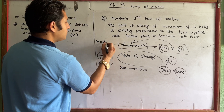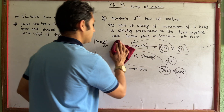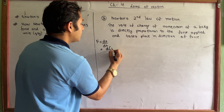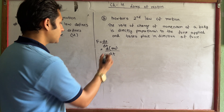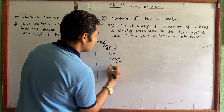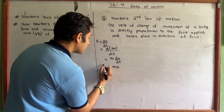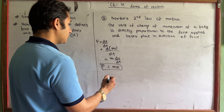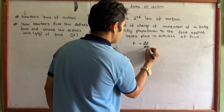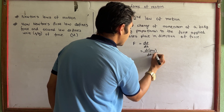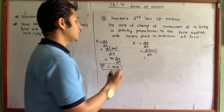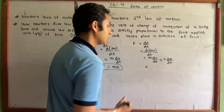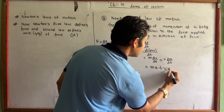F is equal to dp/dt. Here dp/dt is the rate of change of momentum. Now, p equals mv, so F equals dp/dt equals d(mv)/dt. Now if mass is variable, we apply the product rule: m dv/dt plus v dm/dt — that is m into a plus velocity into the rate of change of mass.